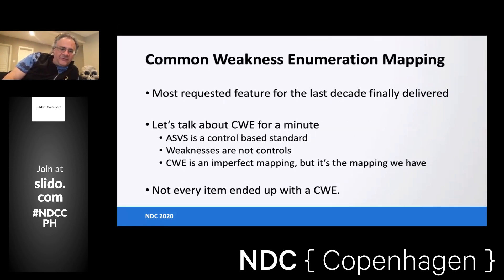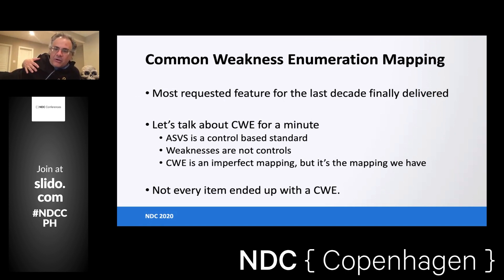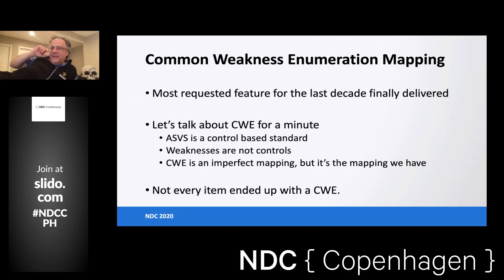We also mapped the requirements to CWEs — the Common Weakness Enumeration, a list of weaknesses from MITRE, a standard in the world of security. But ASVS is about controls for web apps, and weaknesses are not controls. There's no way to make a clean mapping, and the mapping doesn't even make perfect sense. We got asked to do it so many times that we just did it. It's an imperfect mapping — not every item has a CWE — but we did it. Check the box.